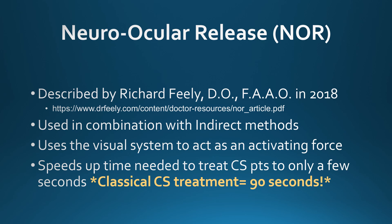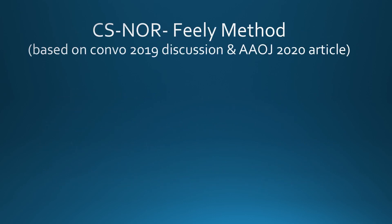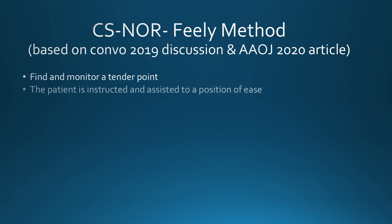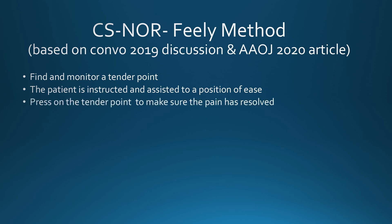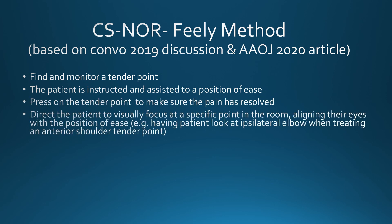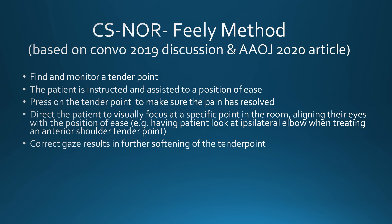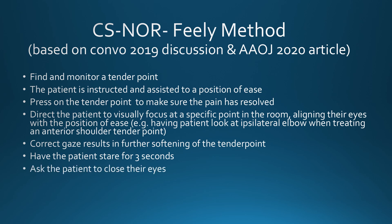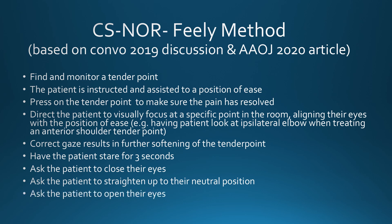I found there were similarities but also differences. My understanding of Dr. Feely's method is: first, find and monitor a tender point. The patient is instructed and assisted to a position of ease where the tender point no longer hurts when pressed on. Direct the patient to stare at a specific point in the room that, when aligned correctly, results in further softening of the tender point. Have the patient hold that treatment gaze for three seconds. Ask the patient to close their eyes, then straighten up to their neutral position, and then open their eyes.